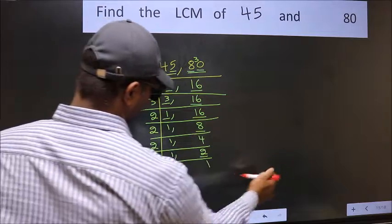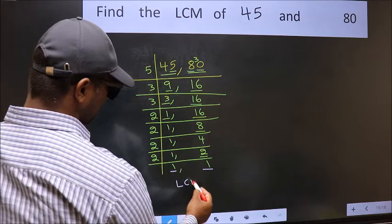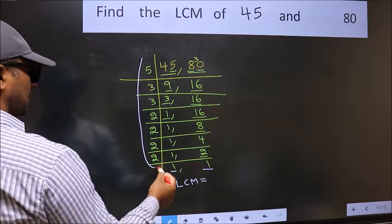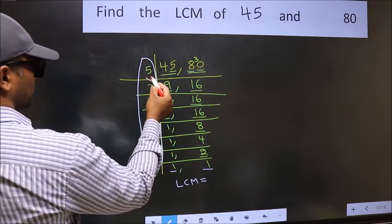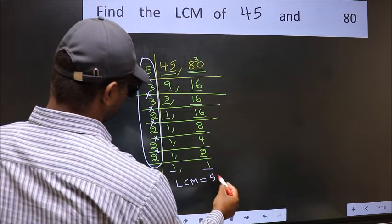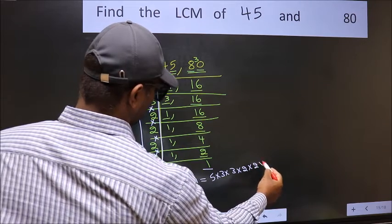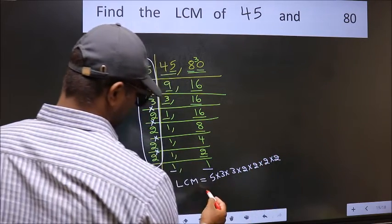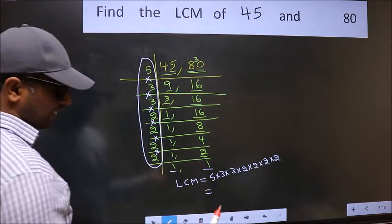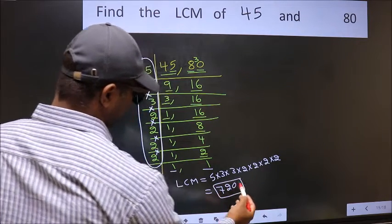So we got 1 in both places. Our LCM is the product of these numbers: 5 × 3 × 3 × 2 × 2 × 2 × 2. When we multiply these numbers, we get 720, which is our LCM.